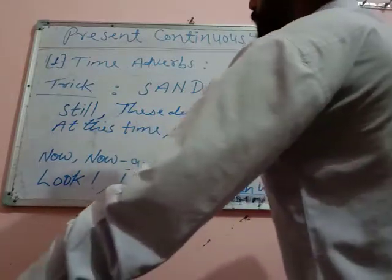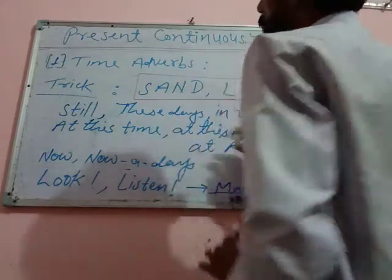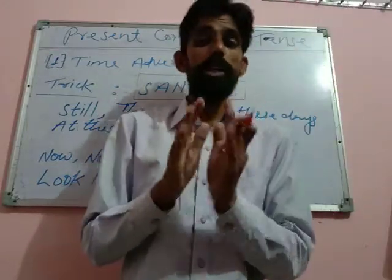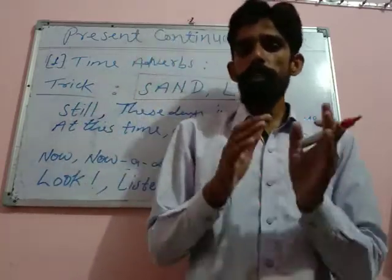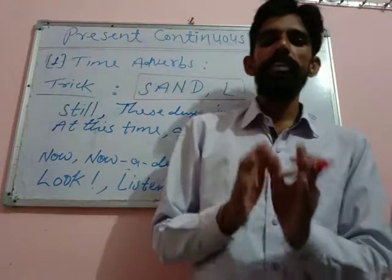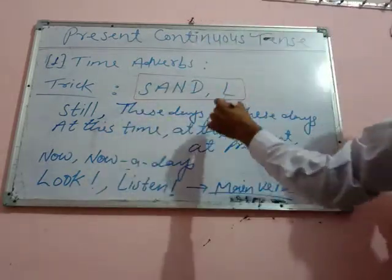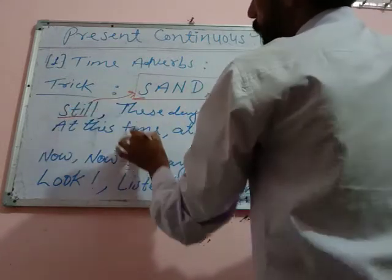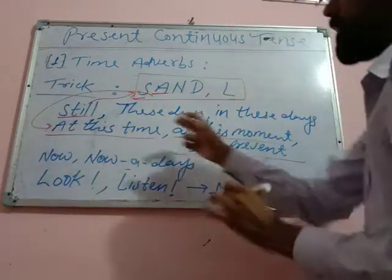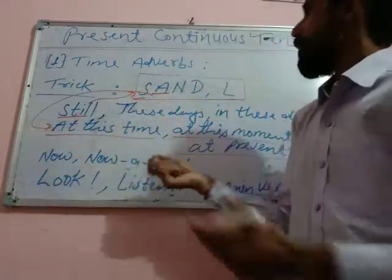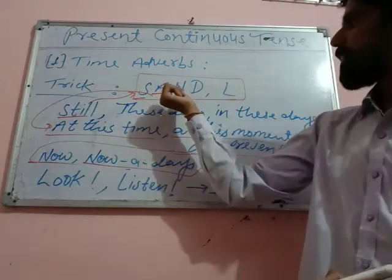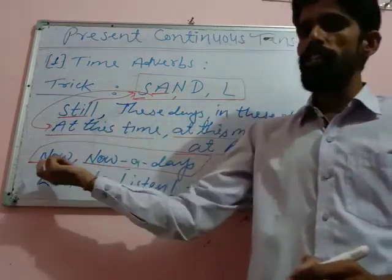First of all, you have to learn the time adverbs. The trick must be in your mind while you are writing time adverbs. I have given all the time adverbs in a tricky way and all the tricks will be very beneficial. The trick is SANDL: S stands for 'as for still'; A stands for 'at this time', 'at this moment', and 'at present' — a complete series starting with 'at'; N stands for 'for now' and 'nowadays' — two words starting with N.